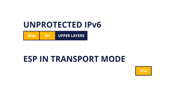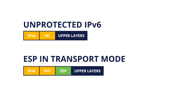Here you see the use of the Encapsulating Security Payload extension header in transport mode. Extension headers that change after sending the packet, like hop-by-hop, routing, or fragmentation headers, should go before the ESP header, shown as EH1, in the figure.